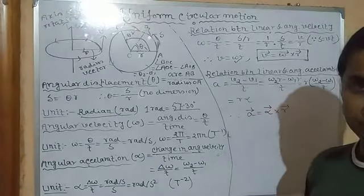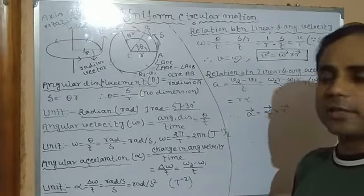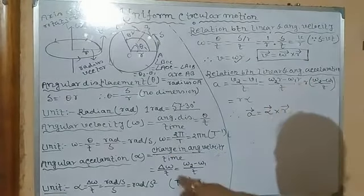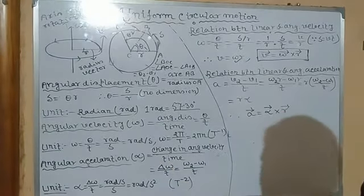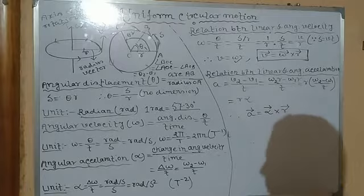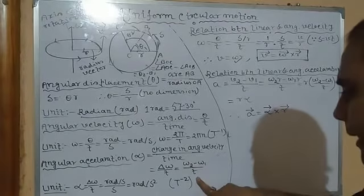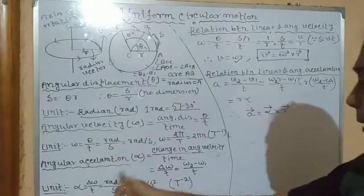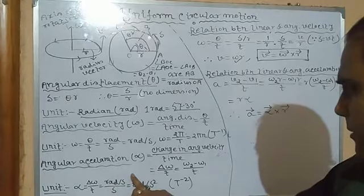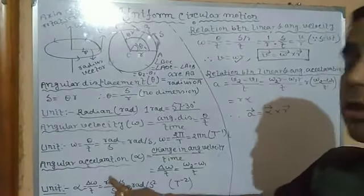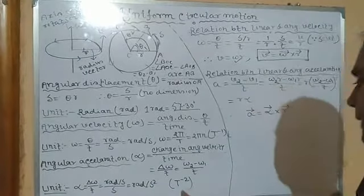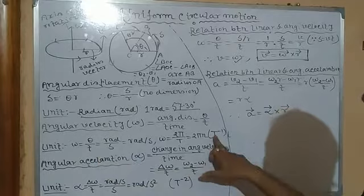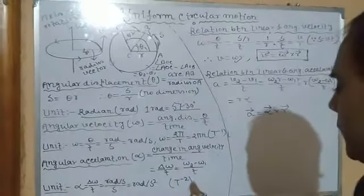Now, angular acceleration. Just as linear acceleration is the rate of change of linear velocity, angular acceleration is the rate of change of angular velocity: delta omega by t, which equals (ω₂ − ω₁) by t, where ω₁ is the initial angular velocity and ω₂ is the final angular velocity after time t. The unit is radian per second per second, which equals radian per second squared. Its dimension is T to the power minus 2.